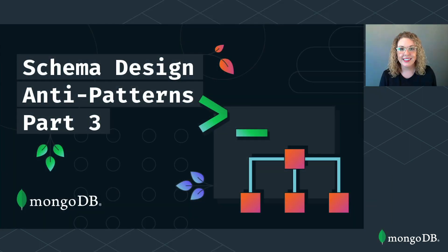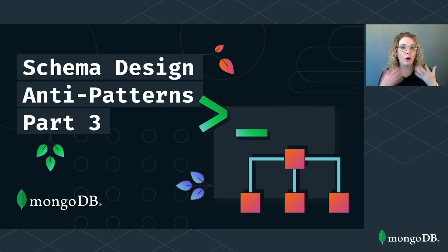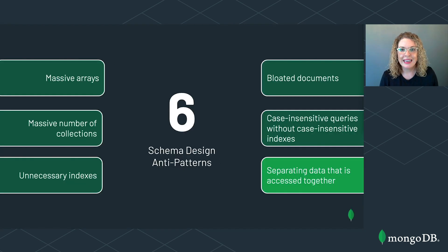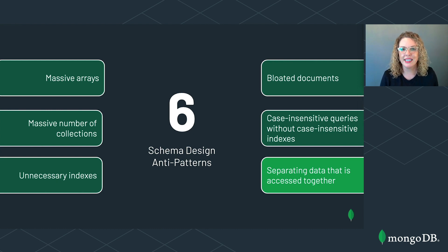Welcome back to the MongoDB Schema Design Anti-Patterns video series. This is part three in the series. If you missed part one or part two, I recommend you watch those first, as this video is going to build on concepts presented in those. Today we're going to discuss the final anti-pattern: separating data that is accessed together. After that, I'll summarize all the anti-patterns and wrap up with some tips and resources.